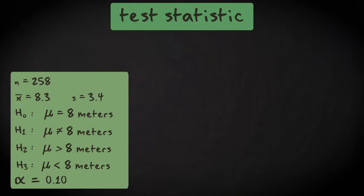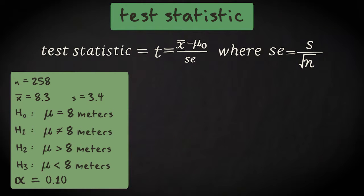Let's now compute the test statistic. The value of the test statistic is the same for all three tests. After all, the sample mean and the null hypothesis mean do not differ between tests. This is the formula we use. That leads to the following computation: 8.3 minus 8 divided by 3.4 divided by the square root of 258. That equals about 1.42.